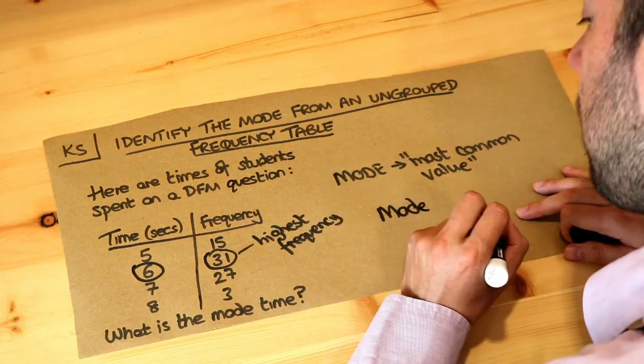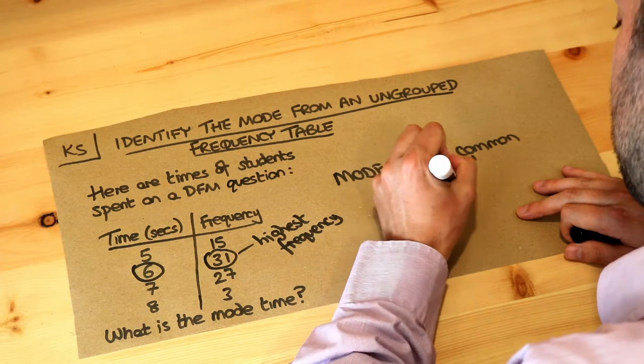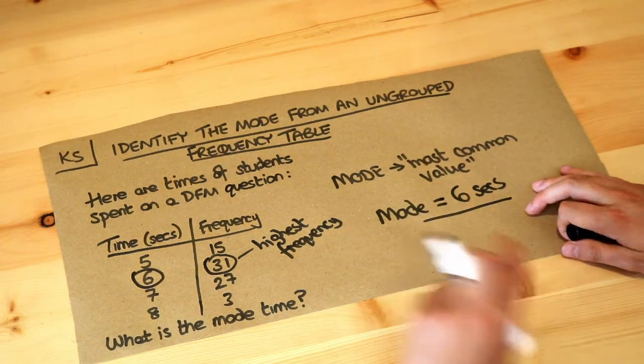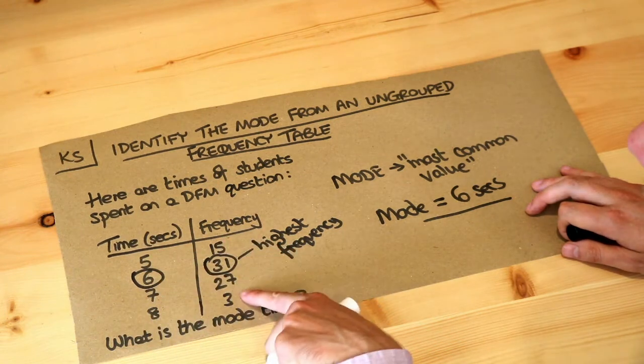So the mode, modal value, is equal to 6 seconds. That's the final answer. So to summarize, just find the value which has the highest frequency.